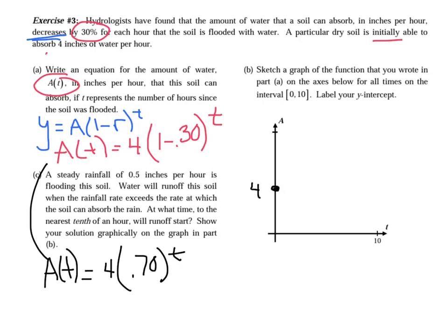For part b, sketch the function. At t equals 0 the height is 4, at t equals 1 it's approximately 2.8, at t equals 2 it's about 1.96, then 1.32 — getting smaller and smaller, never touching the x-axis because it's exponential.